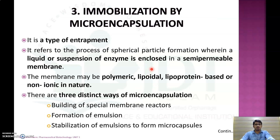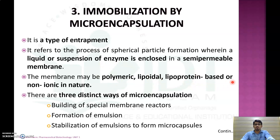The next method of immobilization is microencapsulation, which is a type of entrapment method. Enzyme immobilization by microencapsulation refers to the process of spherical particle formation wherein the liquid or suspension of enzyme is enclosed in a semi-permeable membrane. The membrane used for microencapsulation may be polymeric, lipoidal, lipoprotein-based, or non-ionic in nature. There are three distinct ways of microencapsulation: building of a special membrane reactor, formation of an emulsion, and stabilization of the emulsion to form microcapsules.